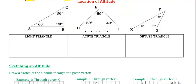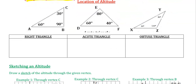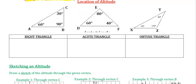Where altitudes are located sometimes depends on the triangle. In a right triangle, we have opposite side AB and vertex C. The idea of an altitude is connecting the vertex to its opposite side and making a perpendicular 90-degree angle. This dotted line that I'm drawing in here — this is the altitude, connecting to make a 90-degree angle.